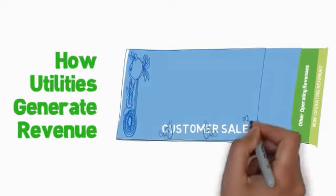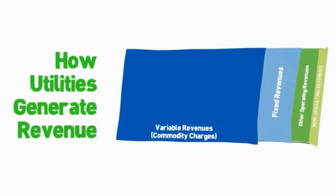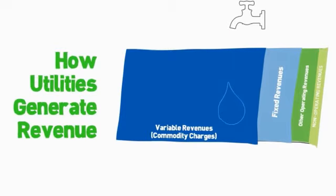Revenues from customer sales can further be divided into two general categories: fixed and variable revenues. Fixed revenues are not dependent on the volume of water used or wastewater discharged by the customer, and typically come from monthly base or service charges. Variable revenues, on the other hand, are linked to the volume of water used or wastewater discharged by customers, derived from the rates applied to these volumes. The balance between fixed and variable revenues is unique for each utility, based on rate structure design, pricing levels, and the water demand profile of the customer base.